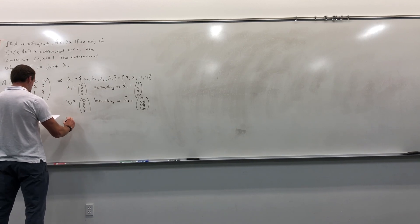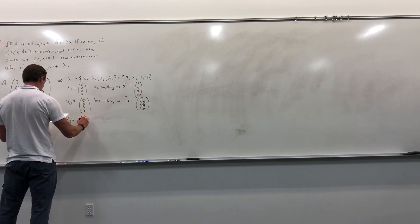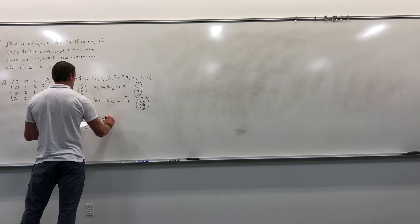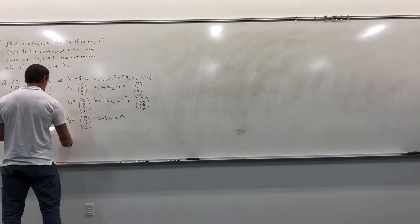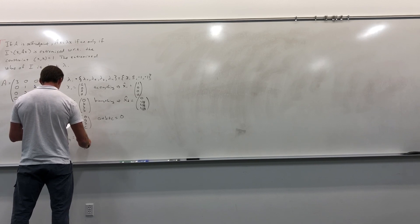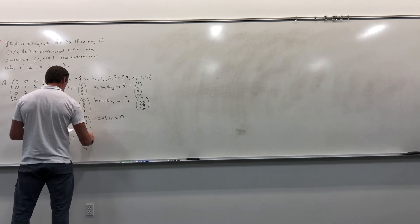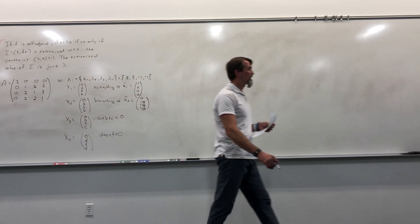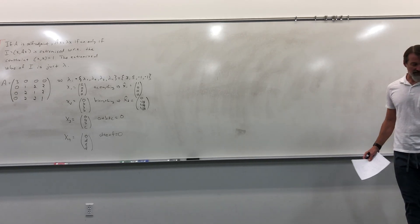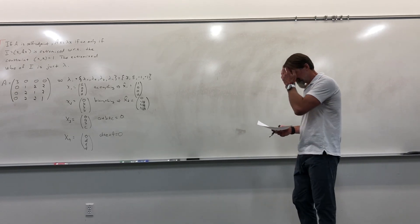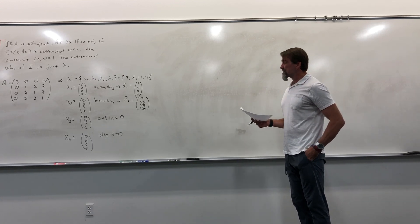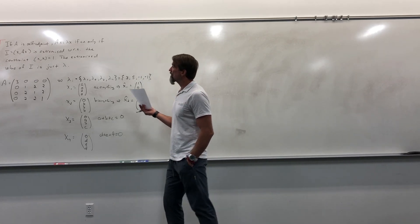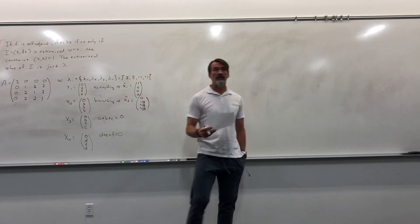More interestingly, x₃ is (0, a, b, c) where a+b+c = 0, and x₄ is (0, d, e, f) where d+e+f = 0. The last two eigenvectors use the same conditions. Now I want to discover these answers through the extremization process and then check: the constraint is ⟨x|x⟩ = x†x = 1.